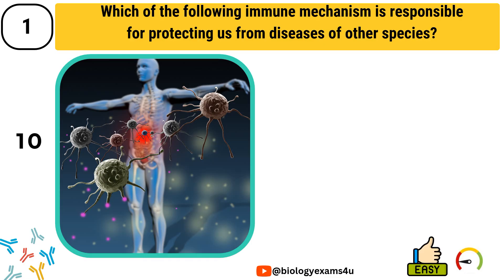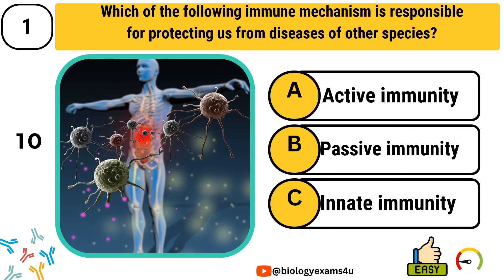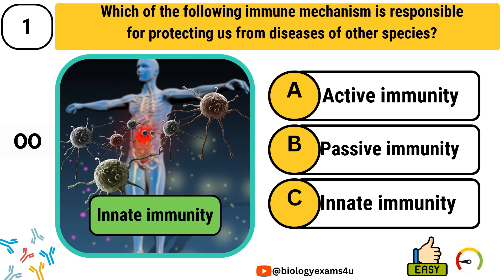Question number 1. Which of the following immune mechanisms is responsible for protecting us from diseases of other species? Option A, active immunity. Option B, passive immunity. Option C, innate immunity. Your time starts now. The correct answer is innate immunity.